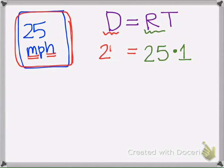So in one hour, your distance here, 25 times 1 is 25. So in one hour, you go 25 miles.